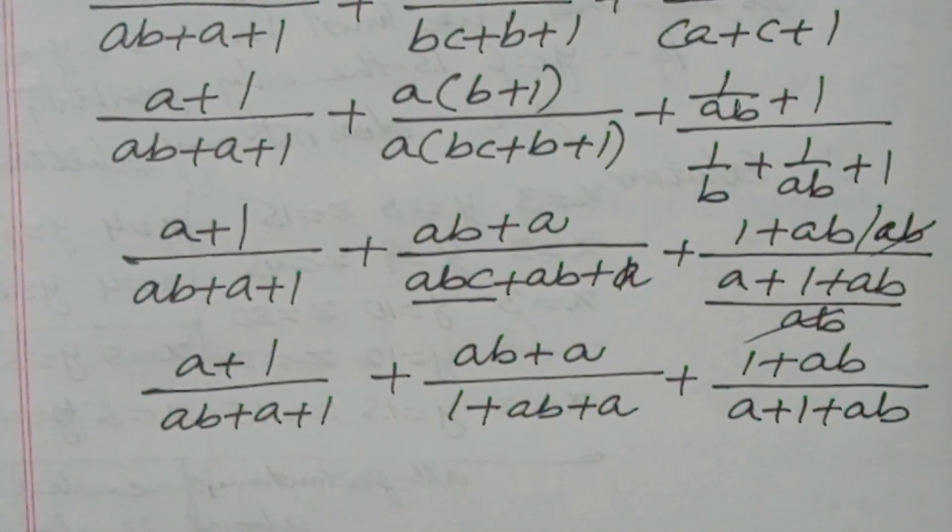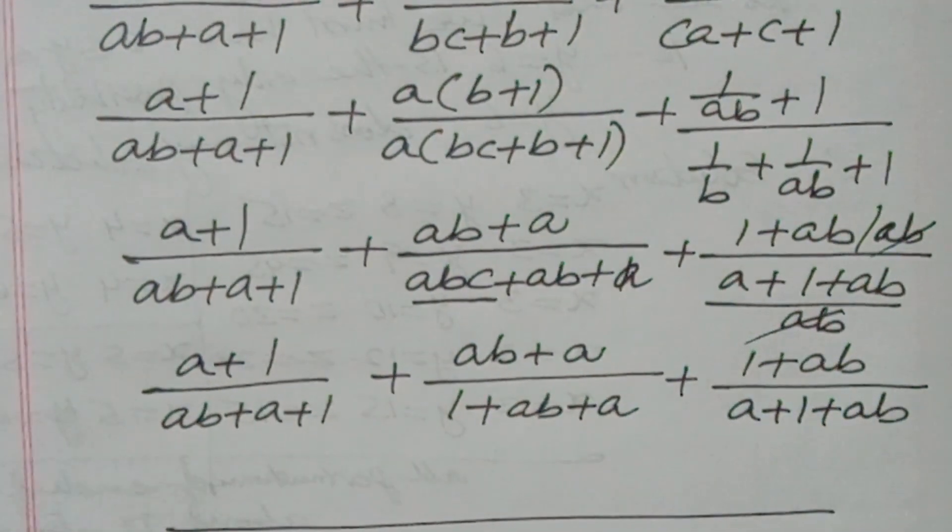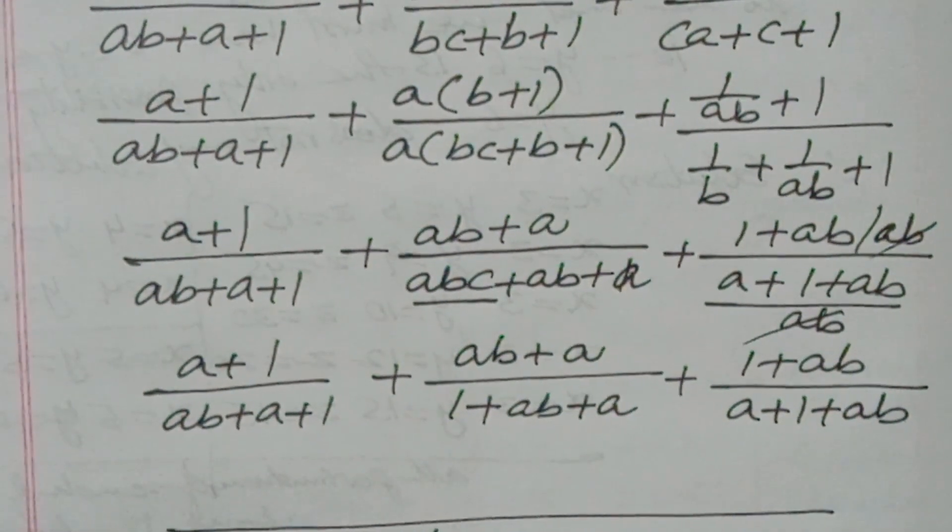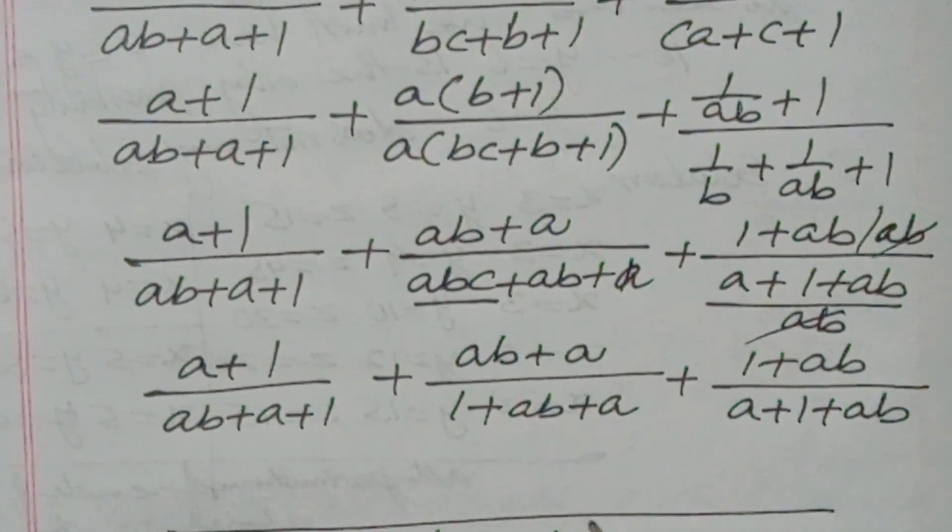So all the three values are having same denominator: ab plus a plus 1.